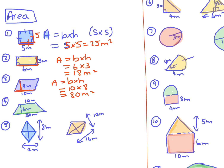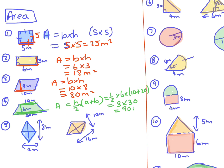This one has a base of 20, a height of 6, and the other side is 10. This is a trapezium, so the formula is half the height times (a plus b). It's going to be a half times 6 times (10 plus 20). A half of 6 is 3, times 30 which is 90, so it's 90 meters squared.